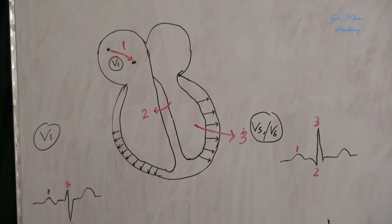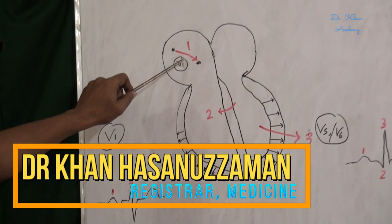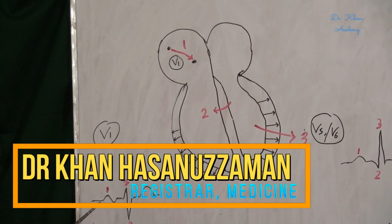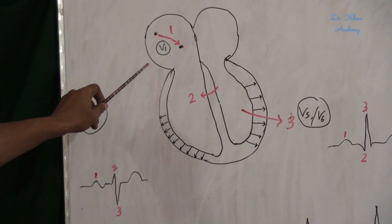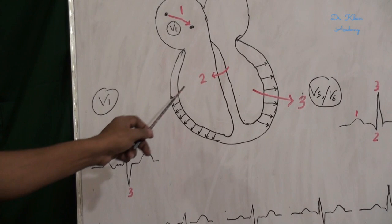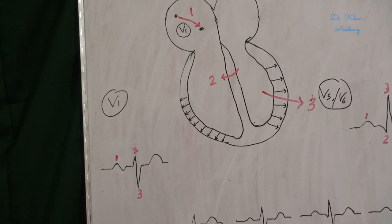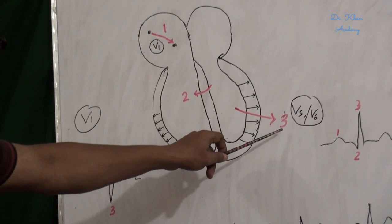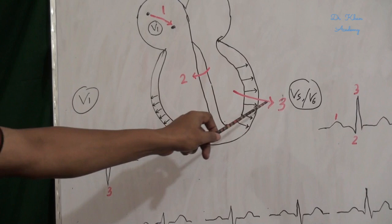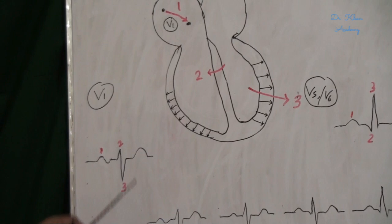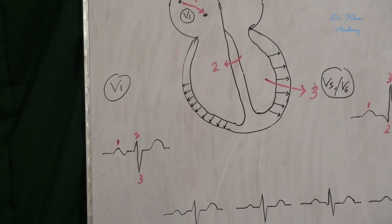Chest lead V1 is placed on the right side. In chest lead V1, impulse number 1 passes at a right angle to the electrode, so it produces a biphasic wave — that is the P wave. Impulse number 2 passes from the right side towards the electrode, so it produces a positive wave — that is the R wave. Impulse number 3 is oriented to the left, away from chest lead V1, so a negative wave is formed — that is the S wave. And the T wave always follows the R wave.